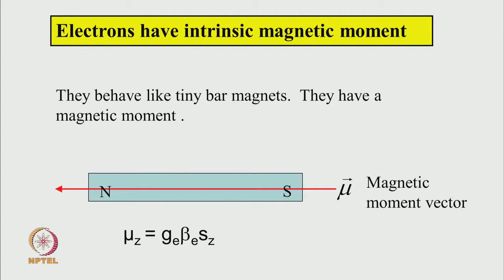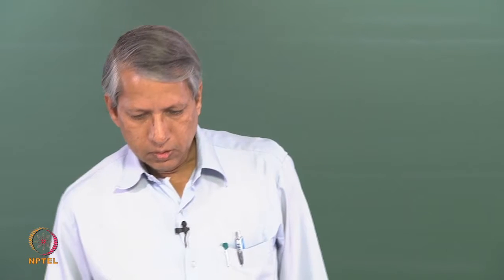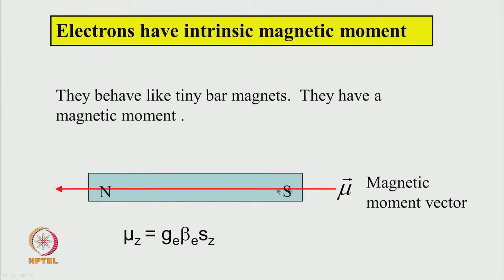So you see how all these experimental results can be explained based on the existence of electron spin. The electron therefore has an intrinsic magnetic moment — it behaves like a tiny bar magnet. The bar magnet has a magnetic moment mu, directed from south to north. The magnetic moment and spin angular momentum are intimately related by the relation: mu_z = g_e * beta_e * s_z, where mu_z is the component of the magnetic moment vector in a given direction, g_e is a proportionality constant called the g-factor, beta_e is the Bohr magneton, and s_z is the component of spin angular momentum.